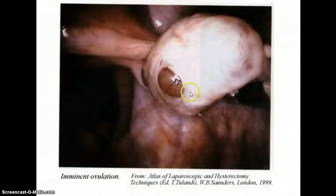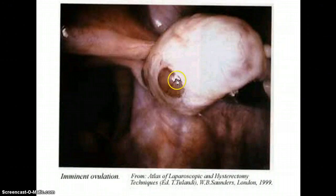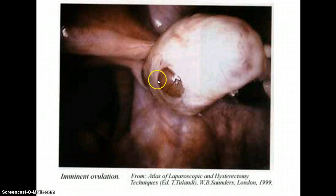Here's a picture looking inside a woman at her ovary — one of those follicles is getting ready to burst open and release the secondary oocyte. This is imminent ovulation.